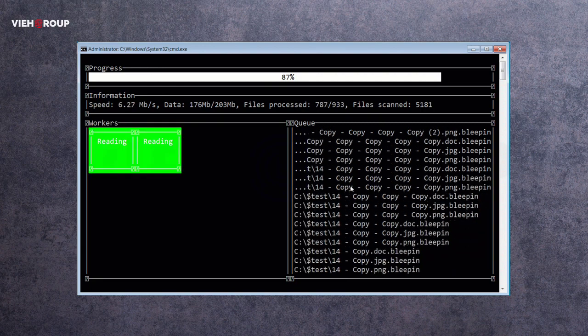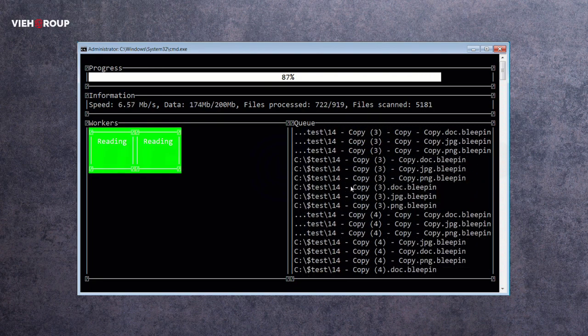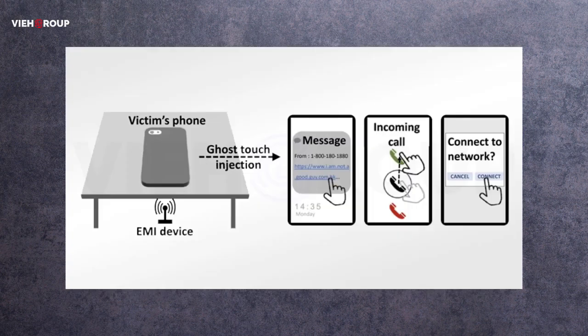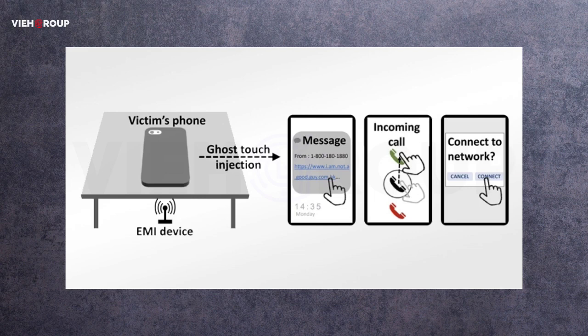Ransomware gangs are hitting hard to whole countries. Now the last news is related to new research. Basically, researchers have demonstrated what they call the first active contactless attack against capacitive touchscreens. Ghost Touch, as it's called, uses electromagnetic interference (EMI) to inject touch points into touchscreens without the need of physically touching it.